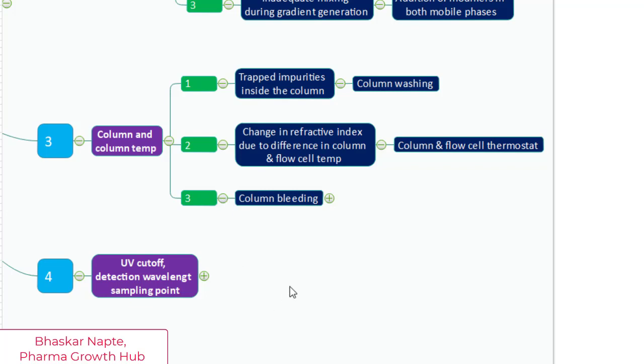The third point is column bleeding. On rare occasions, which is not much seen but you cannot neglect that, on rare occasions the bleeding or leaking of silica from the column can occur and this can cause baseline disturbance. As you wash the column,